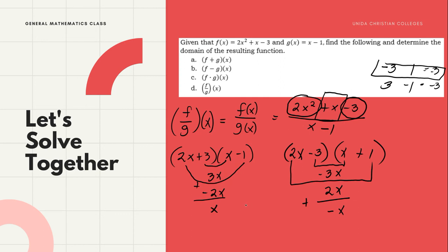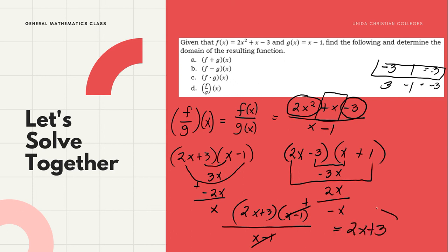So we have (2x + 3)(x - 1) over (x - 1). The (x - 1) terms cancel, leaving 2x + 3 as the final answer.